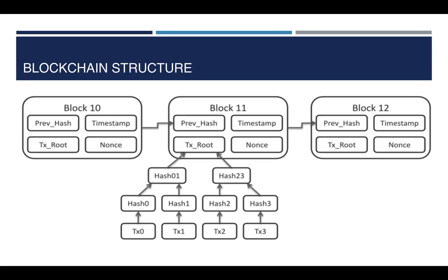In this slide you can see how blocks are stored in a blockchain. As you can see, there are three blocks in this picture. Every block contains different fields: previous hash, timestamp, transaction root, and nonce. One interesting field is the transaction root — every transaction is hashed to a value and consolidated to a certain level to form that transaction root.